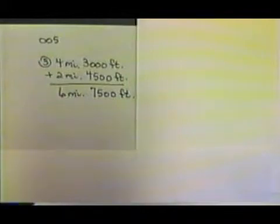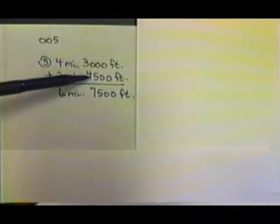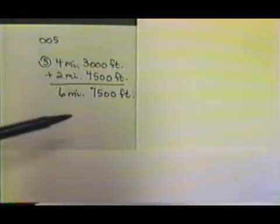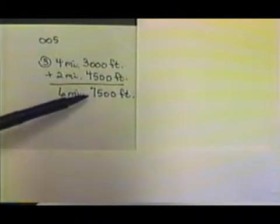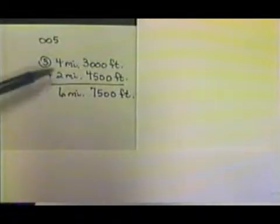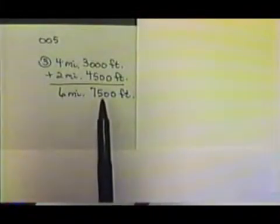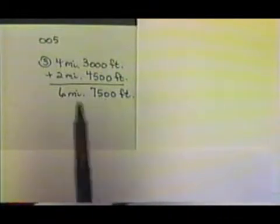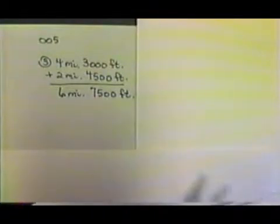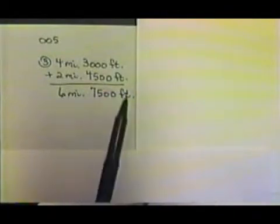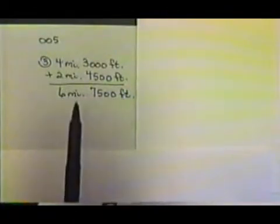Let's look at another example. This time, we're adding miles and feet. When we add our 4,500 feet to 3,000 feet, we end up with 7,500 feet. Our 2 miles and our 4 miles will give us 6 miles. Now, this would be our answer unless we have enough feet to change those feet into some miles. So, let's think about the conversion fact that relates feet to miles.